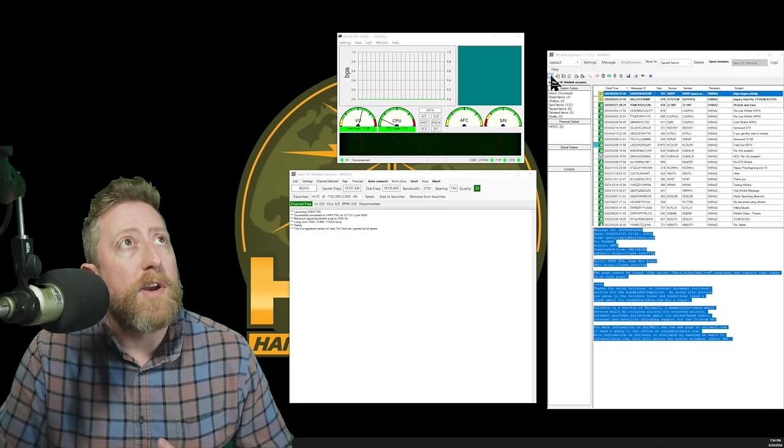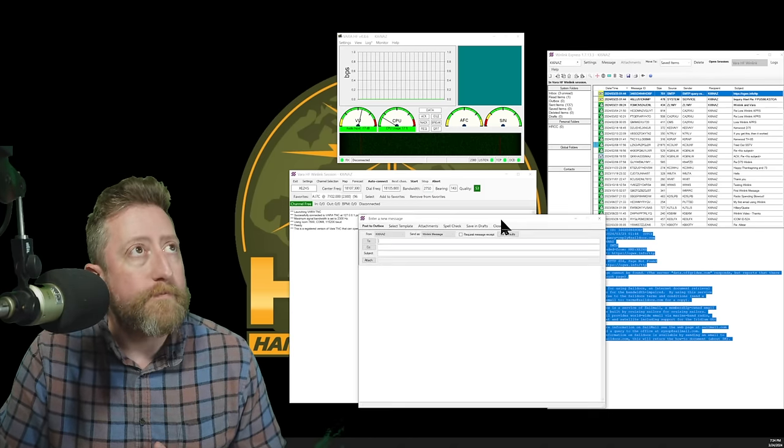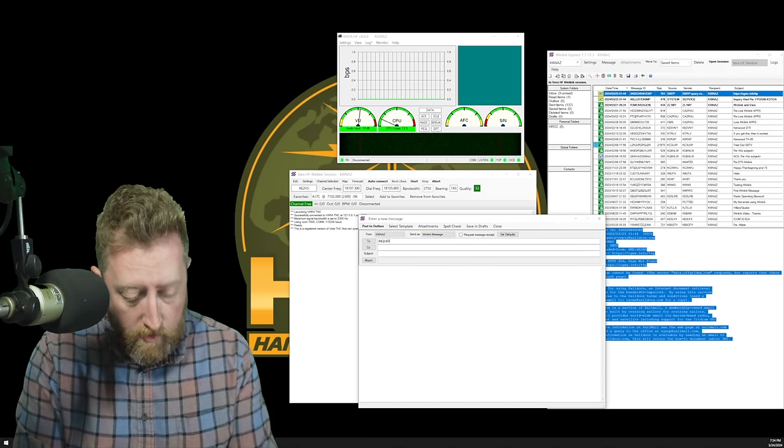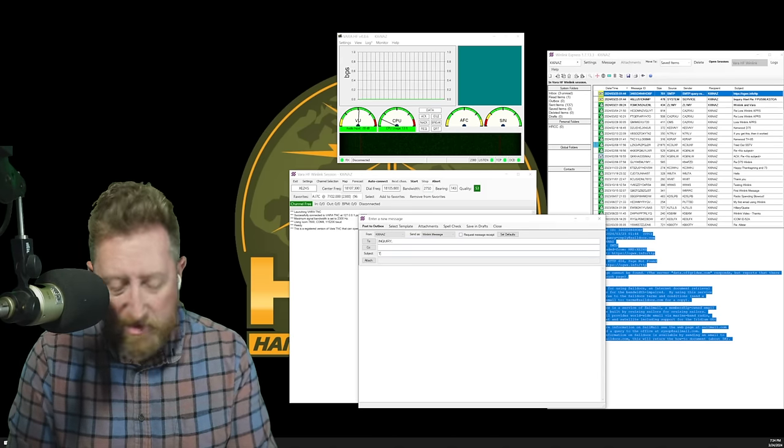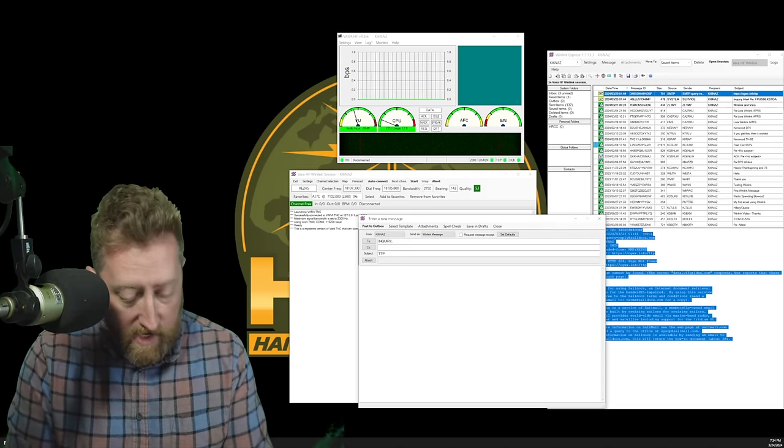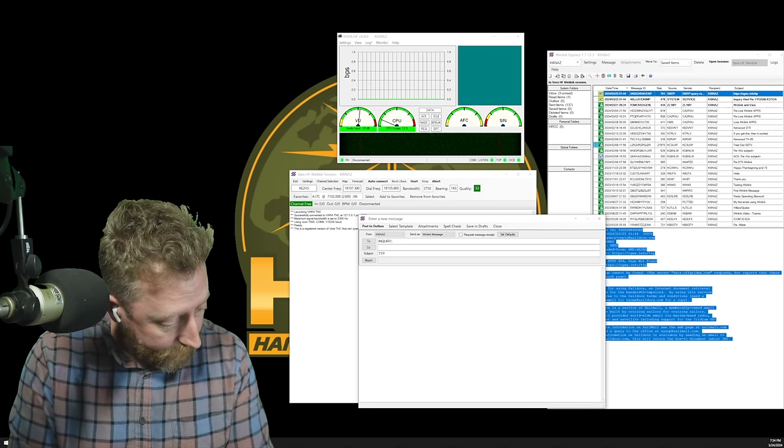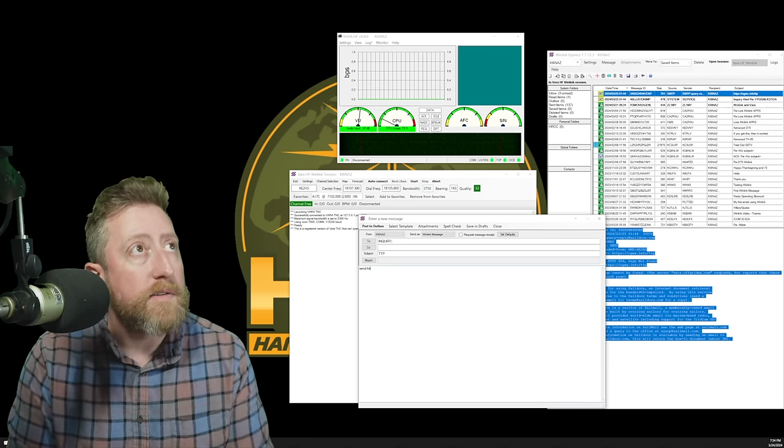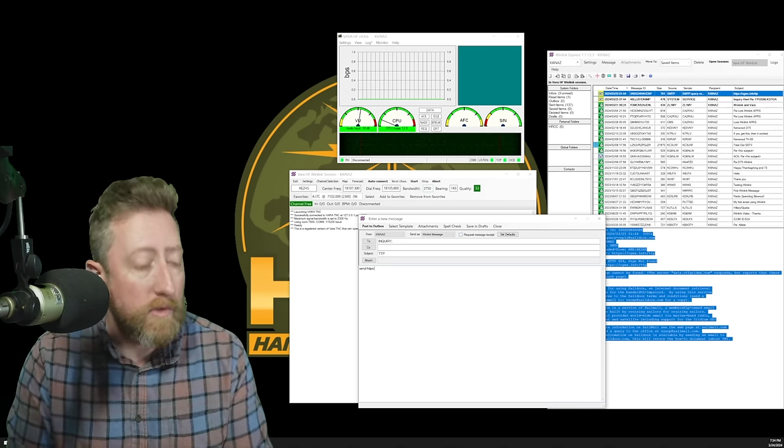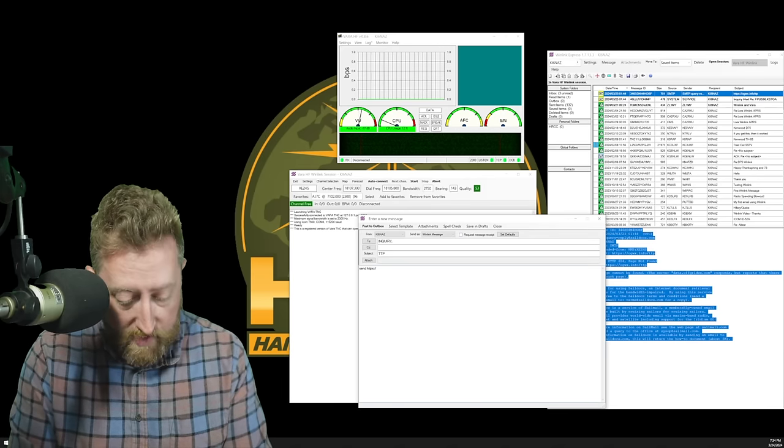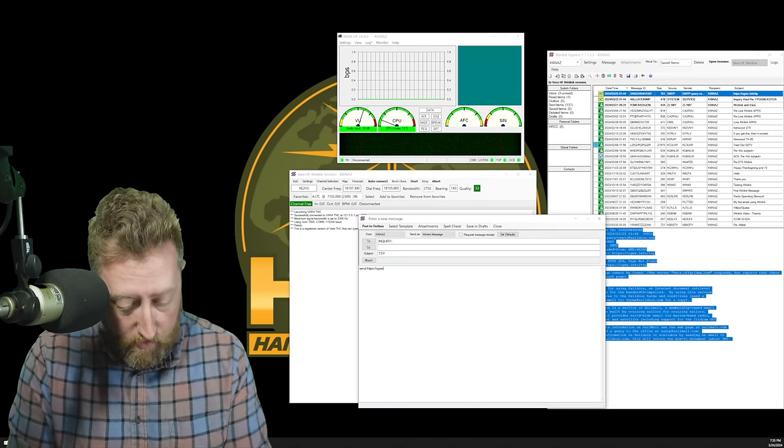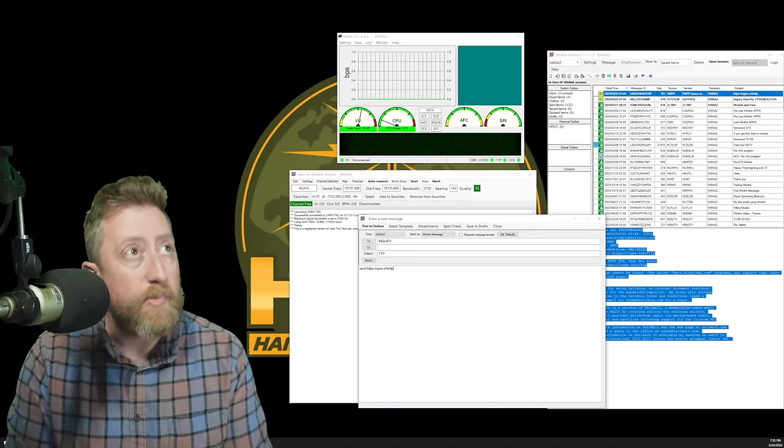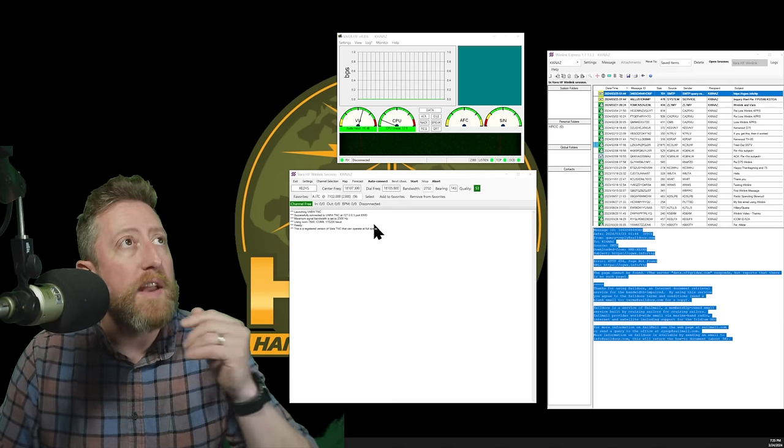So let's bring up an email here. So I'm going to say inquiry. And I'm just going to put TTP in here. And I'm going to say send. And it's going to be HTTPS colon, forward slash, forward slash, OG, off-grid, WX.info, forward slash, TTP. So I should be able to send that now.